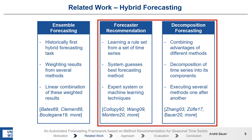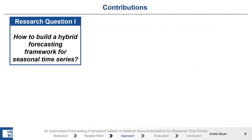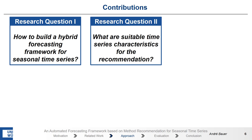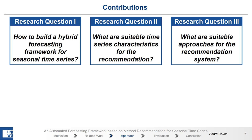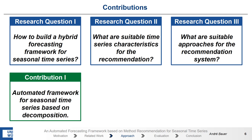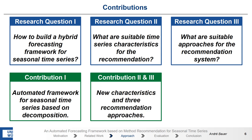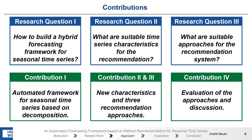Our work focuses on forecasting recommendation and decomposition. We pose ourselves three research questions: the first one is how to build a hybrid forecasting framework for seasonal time-series; the second one is what are suitable time-series characteristics for the recommendation; and the last one is what are suitable approaches for the recommendation system. To answer these questions, we have the following contributions: we create an automated framework for forecasting seasonal time-series, we introduce a new set of characteristics, and design three recommendation approaches, and we have a broad evaluation.